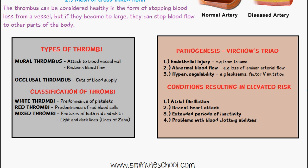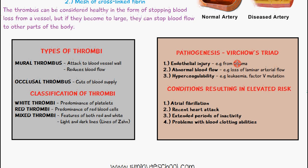The factors that make you more likely to develop a thrombus fall under Virchow's triad. These are: endothelial injury — if the endothelial wall of the blood vessel is injured, you're more likely to develop a thrombus, for example from trauma; abnormal blood flow — various diseases can change normal laminar arterial blood flow, causing turbulence; and hypercoagulability, where coagulation is more likely to occur, as seen in diseases like leukemia or factor 5 mutation.